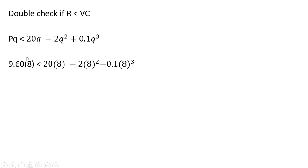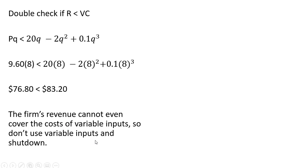Plugging 8 in for q, this firm's revenue from operating cannot even cover its cost of variable inputs, so the firm should shut down. The firm's revenue cannot cover the cost of variable inputs, so the firm should not use variable inputs and therefore should shut down.